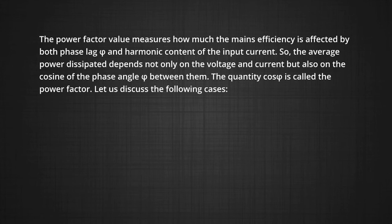Here, we can say that the average power dissipated depends not only on the voltage and current, but also it depends on the cosine of the phase angle phi which is between them. The quantity cos phi is called the power factor.